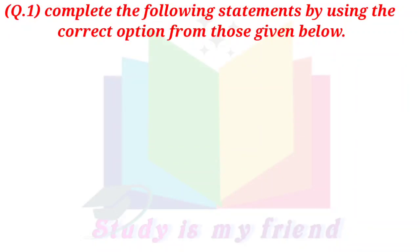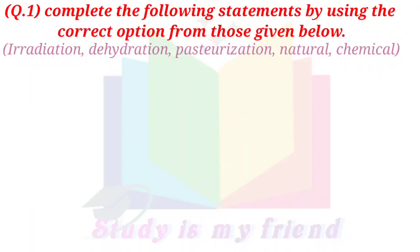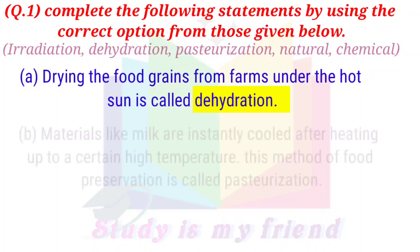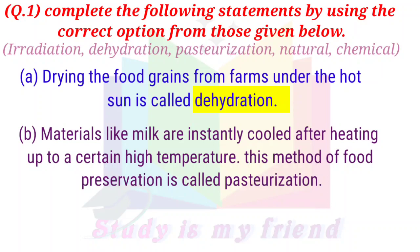Question 1: Complete the following statements by using the correct option from those given below: Irradiation, Dehydration, Pasteurization, Natural, Chemical. a. Drying the food grains from farms under the hot sun is called dehydration. b. Materials like milk are instantly cooled after heating up to a certain high temperature. This method of food preservation is called pasteurization.